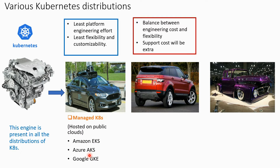The next category is the private vehicle category, which represents a balance between engineering cost and flexibility. However, the support cost will be extra — like annual maintenance you bear yourself. When you buy a private vehicle, you have choices among pre-built cars from various companies, and once you have the car, you can customize it a little bit. This is the balance between engineering cost and flexibility.